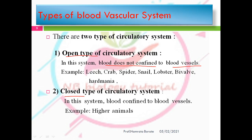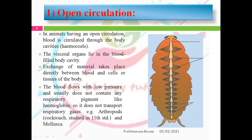In the open type of circulatory system, the blood does not confine to blood vessels. Examples include leech, crab, spider, snail, lobster, and bivalves. In the closed type, blood is confined within blood vessels, as seen in higher animals. In open circulation, blood is circulated throughout the body cavity — meaning blood vessels are absent and instead a body cavity called the hemocoel is present.